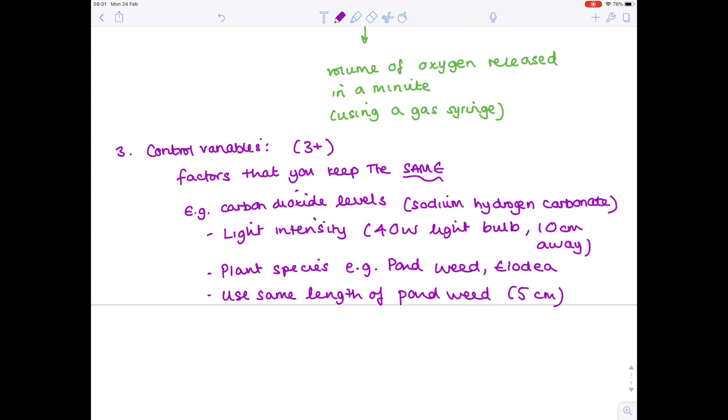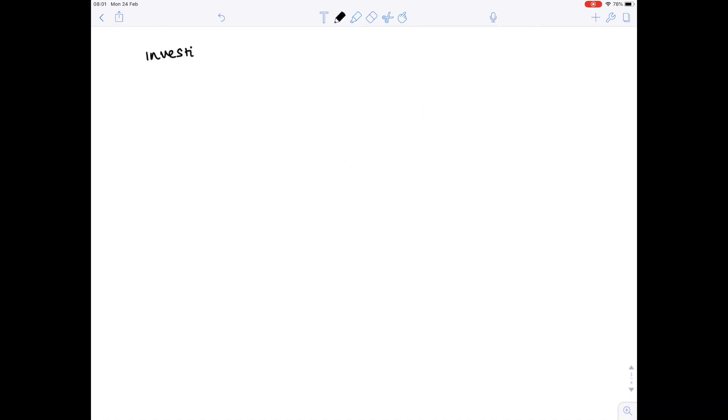And so as you can see, I've provided at least four control variables. I'm pretty confident in all of those. And I know that it's going to enable me to carry out a really good experiment. So now let's actually draw a diagram and see what sort of apparatus you'd need. I'm still going to be looking at temperature and its effect on photosynthesis.